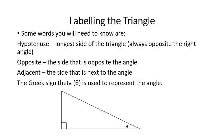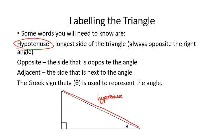Some words you're going to need to know for this video tutorial are, first of all, the hypotenuse. The hypotenuse is the longest side of any right-angle triangle. A little trick to remember is that the hypotenuse is always opposite the right angle in a right-angle triangle.